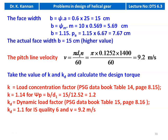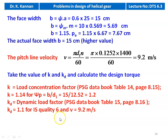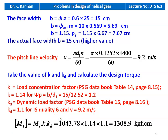Pitch line velocity V = π × D1 × N / 60 = π × 0.1252 × 1400 / 60 = 9.2 m/s. For checking KKD: load concentration factor K = 1.14 for ψP = B/D1 = 15/12.52 = 1.2. Dynamic load factor KD from page 8.16, table 15: KD = 1.1 for IS quality 6 and V = 9.2 m/s. Design torque (revised) = MT × K × KD = 1043.78 × 1.14 × 1.1 = 1308.9 kgf·cm.